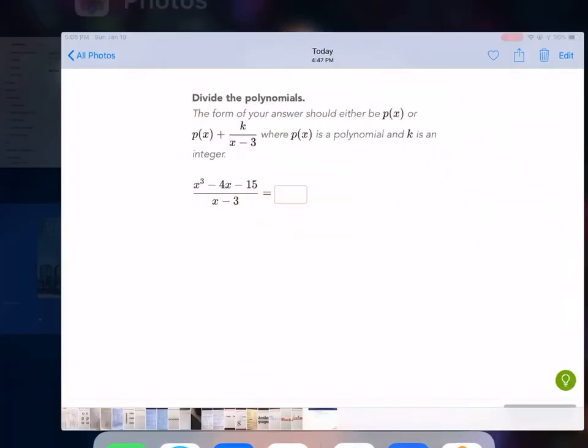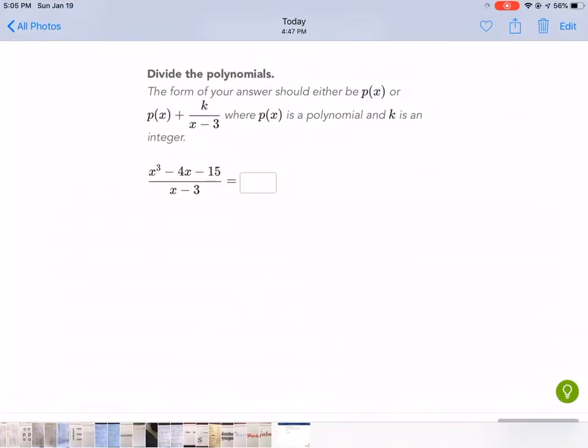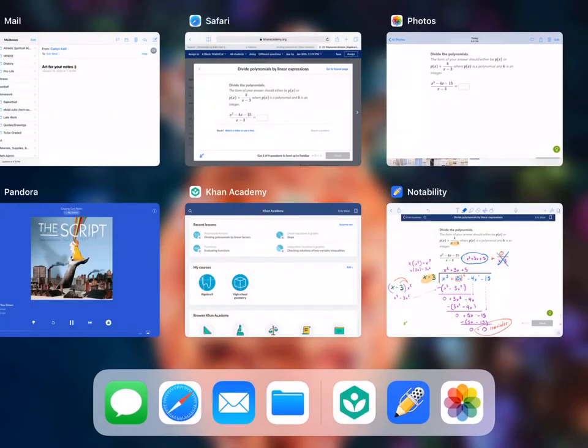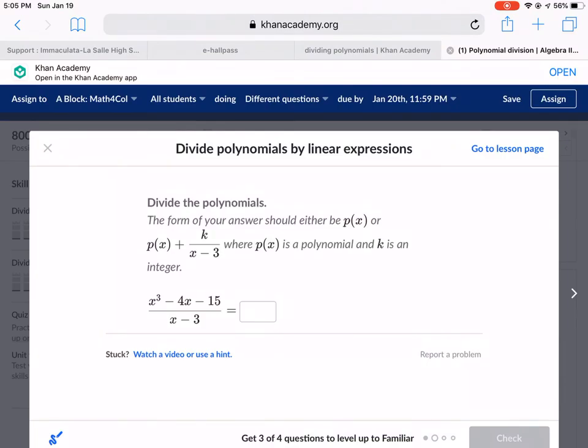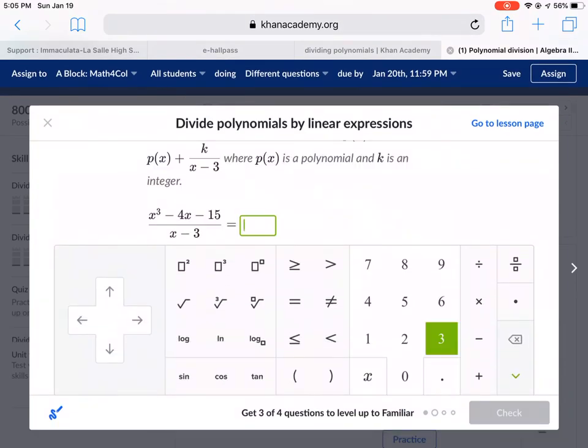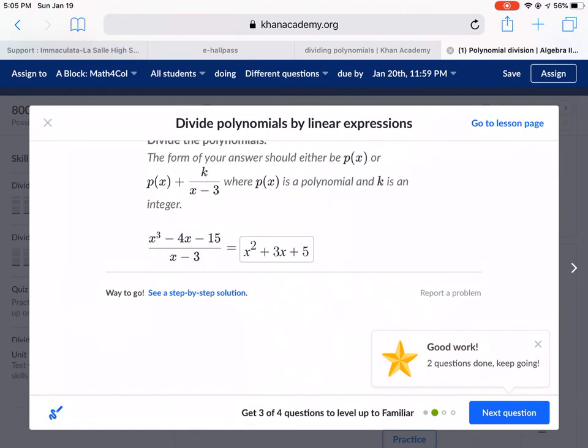So let me go into Khan Academy and type that answer in. I'm going to type x² plus 3x plus 5, no remainder, check that. What a satisfying sound. This has been Mr. West with dividing polynomials by linear expressions. Have a great day.